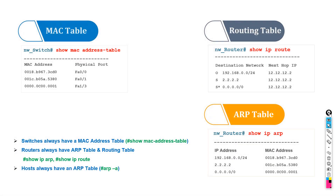What is a MAC address table? What is a routing table? And what is an ARP table? Which type of device has which type of table? Does a computer have an ARP table or a routing table or what? Let's discuss this.